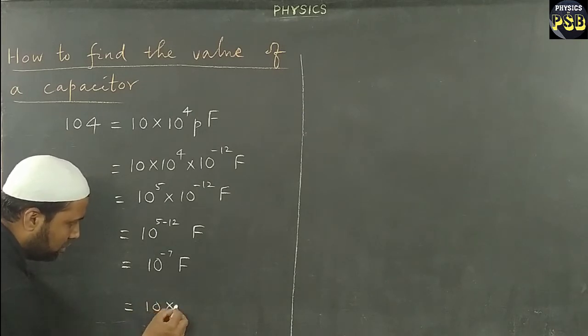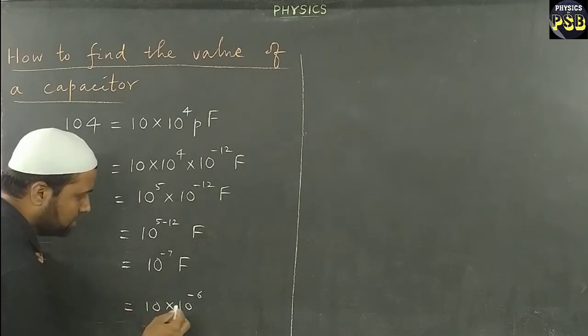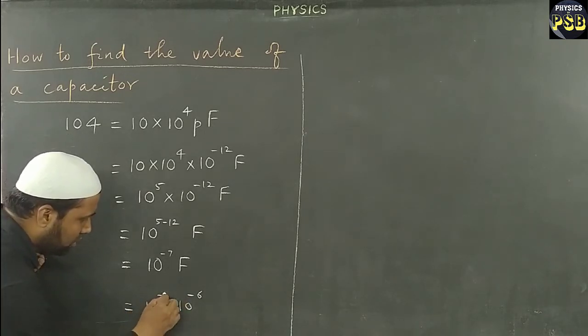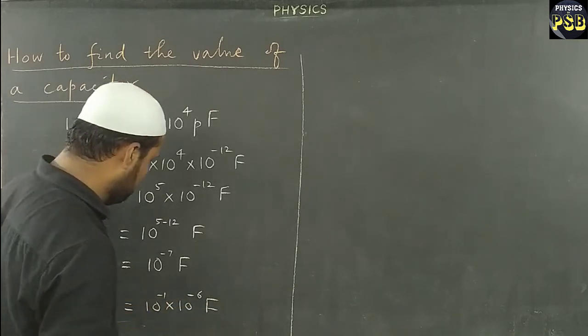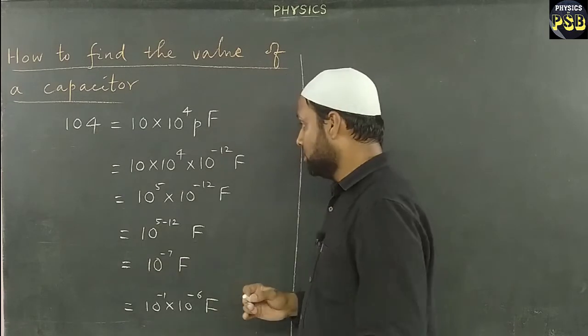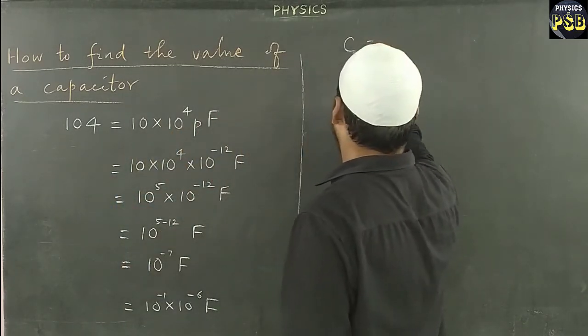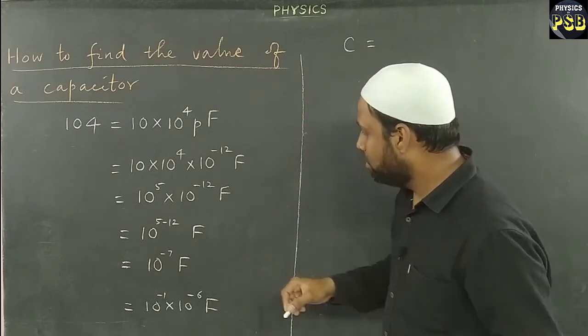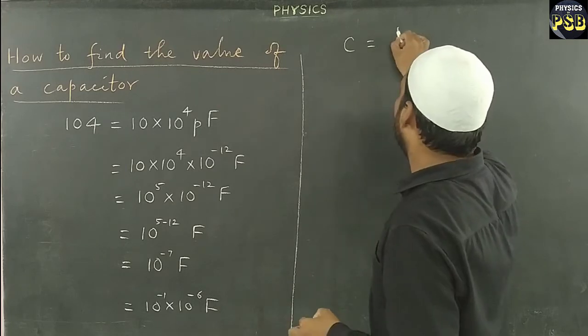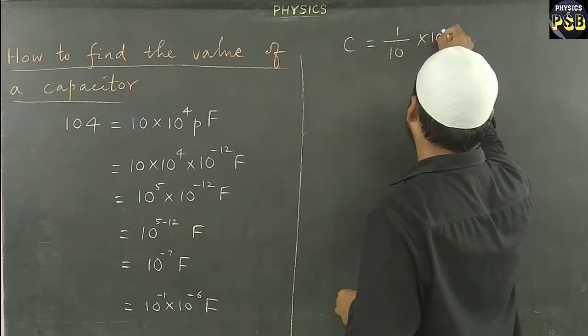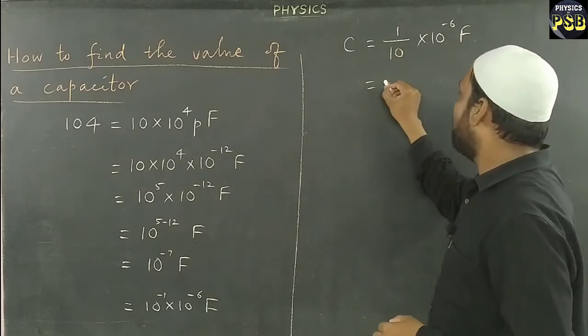10 × 10^-1 × 10^-6 farad. And here I use C to represent the capacitance of the capacitor. We wrote 10^-1 means 1/10 × 10^-6 farad. Here 1/10 is 0.1.